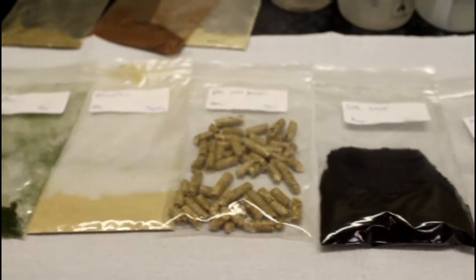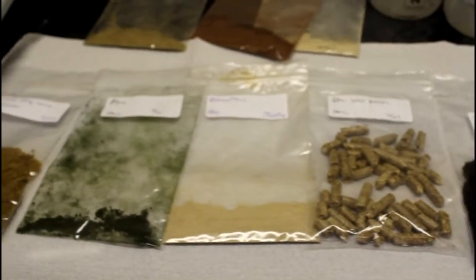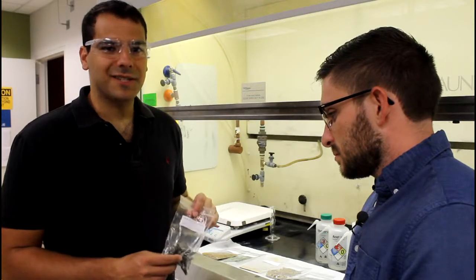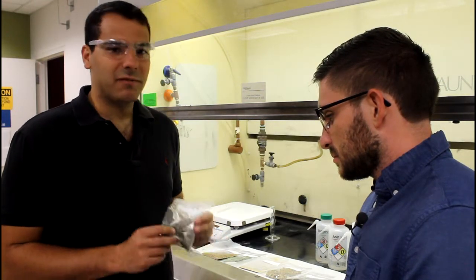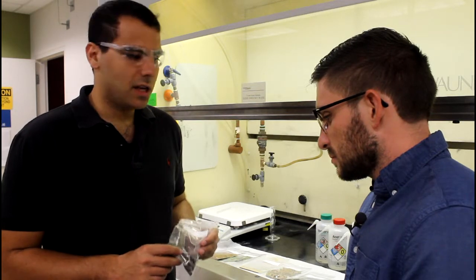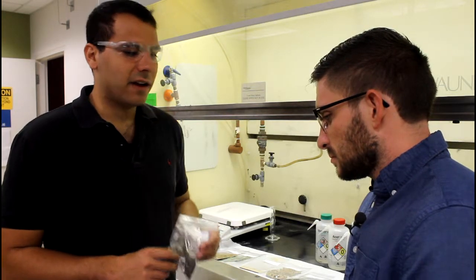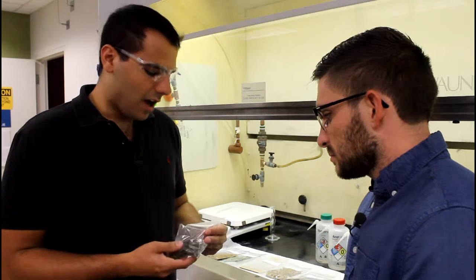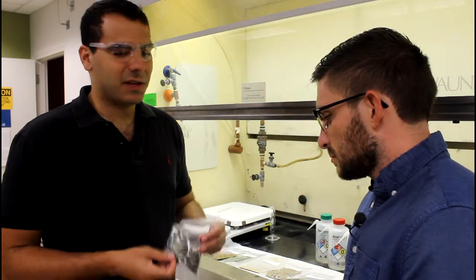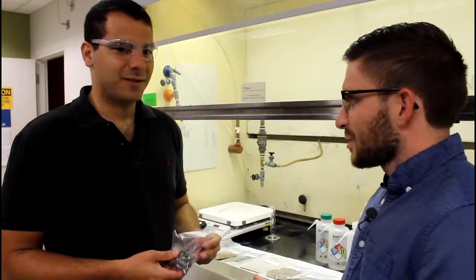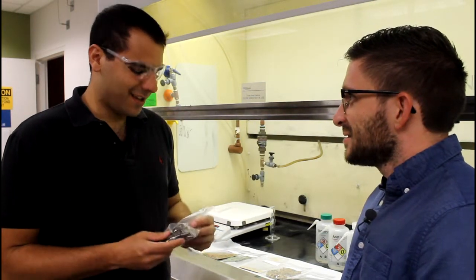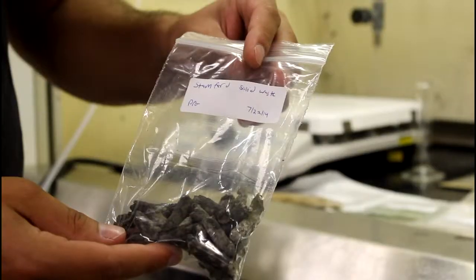David, you set up some biomass for us. What do we have here? So the first one we're going to talk about is Stanford solid waste. This is waste generated by the people of Stanford. We need to dry it and pelletize it first, and then we can put it into our gasifier and break it down into much smaller compounds. It's really useful because it's completely a waste product, but it's a little smelly too. So what kind of waste is that? It's poop, Josh. All right.